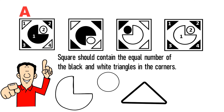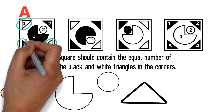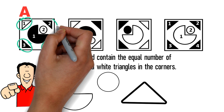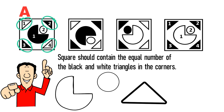In square A, the triangles are positioned diagonally across from each other: white triangles are in the upper left and bottom right corners, and black triangles are in the bottom left and upper right corners. The same pattern exists in shape B — two white and two black triangles. Shape C also has two black triangles on the left and two white triangles on the right. But if we look at choice D, we see that there are four black triangles in the corners.